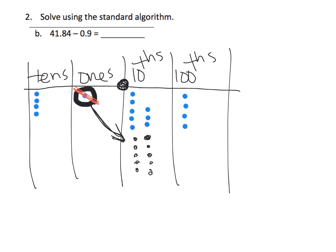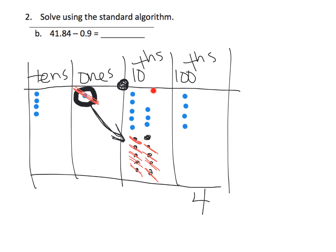Now I have enough tenths to take away nine tenths. So I'm going to cross off nine tenths: one, two, three, four, five, six, seven, eight, nine. So I've crossed off nine of them. That leaves us with the answer. We still have four hundredths. We have these eight plus this one — so that's nine tenths left over. We have no ones because this one got cashed in. So we have four tens, and the answer is 40 and ninety-four hundredths.